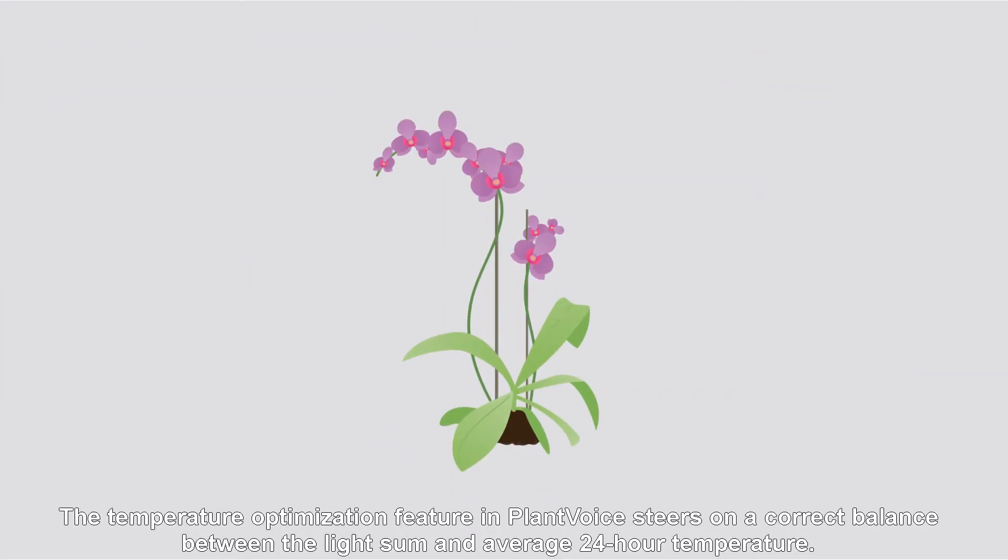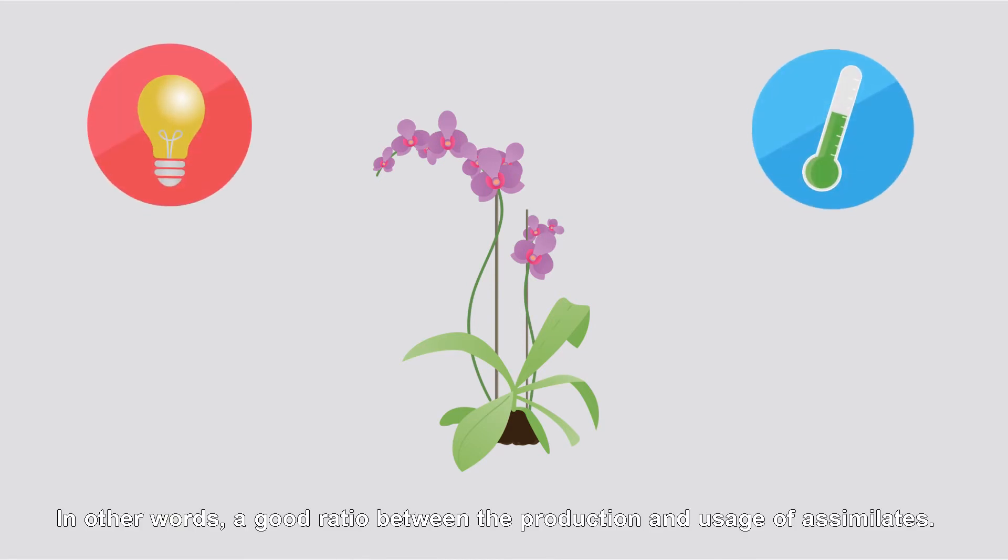The temperature optimization feature in PlantVoice steers on a correct balance between the light sum and average 24-hour temperature. In other words, a good ratio between the production and usage of assimilates.